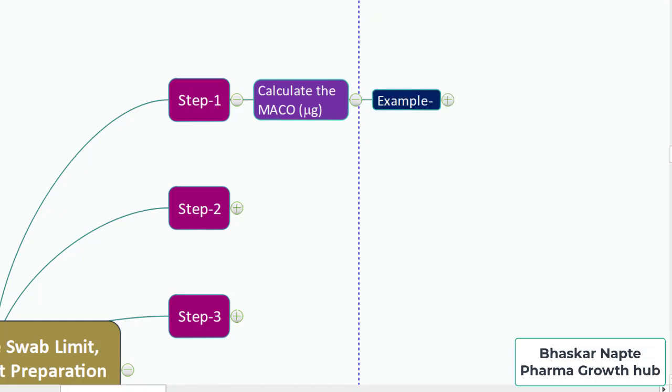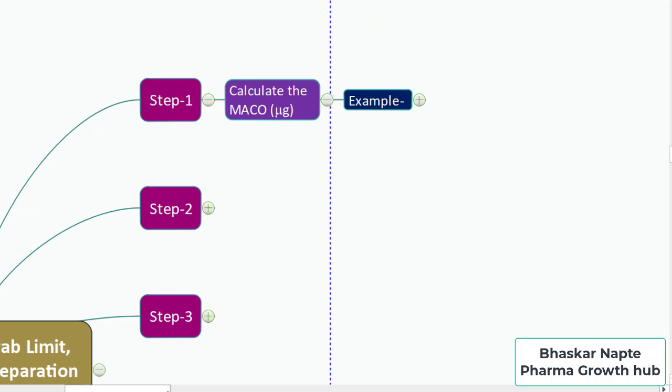There are two ways of calculating MACO: one is with the help of health-based exposure limits, and the second is with the help of the general PPM limit approach. Within these two, you need to identify which one gives the more stringent MACO value, and that has to be considered as your MACO value.